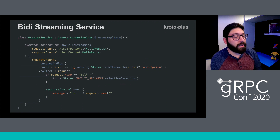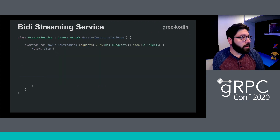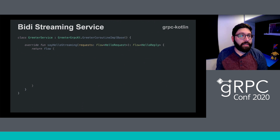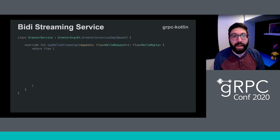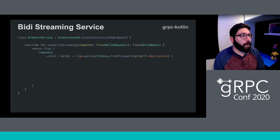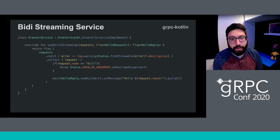Now we can look at what the equivalent looks like using the gRPC Kotlin official bindings. The key thing to notice is that instead of accepting two channels, the official bindings actually accept a flow of requests and return a flow of responses — these are called streams of data. The implementation remains largely the same otherwise. We catch and log client errors, consume our requests, and since this is the official bindings, we use the fluent builders to build out our messages.